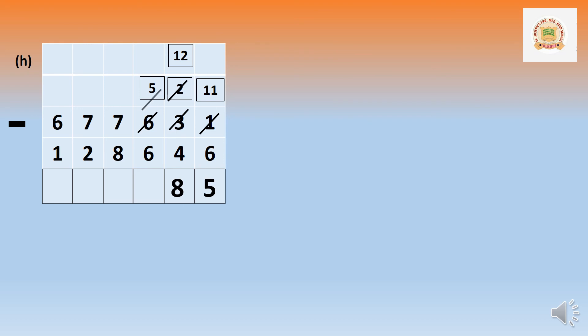In the hundreds: 500 cannot minus 600. Borrow 1000 from 7000. That becomes 1500, and 7000 becomes 6000. Fifteen minus 6 equals 9.